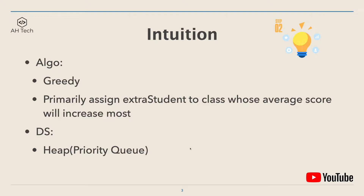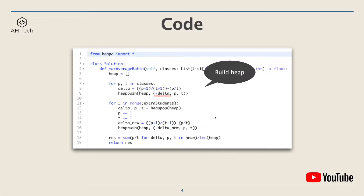To keep track of the class that will have the highest score increase, we will use the heap data structure, also called a priority queue. The first step is to build a heap. In Python, you can use a standard list to form a heap, using heappush and heappop APIs to add and remove items. For every item in classes, we calculate a delta — if we assign an extra student to that class, how much will the average score change — then we push a tuple of negative delta, pass, and total into the heap.